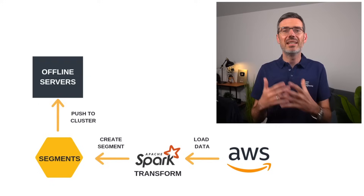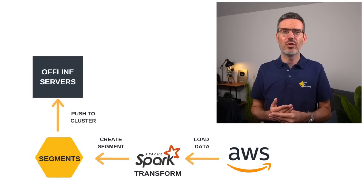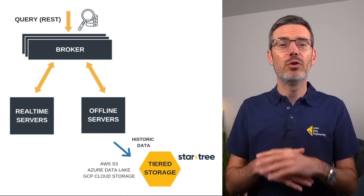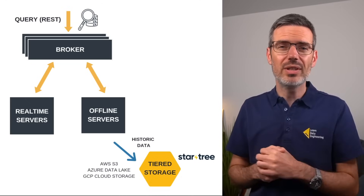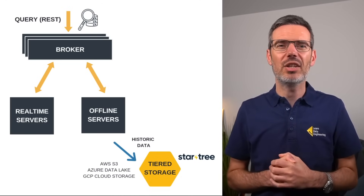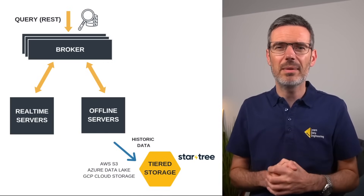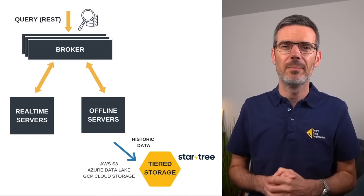Once uploaded, the segments are assigned to offline servers, indexed, and immediately available for queries. By default, segments are stored on the local disks of the servers. If you're using StarTree, you can also take advantage of tiered storage, which lets you offload older segments to shared cloud storage. That way, you can keep recent data hot and historical data cost-efficient without giving up on performance.